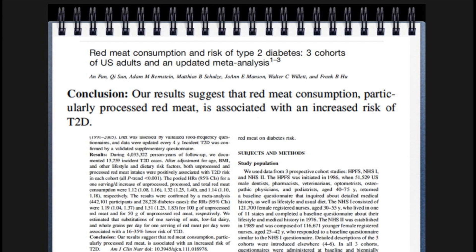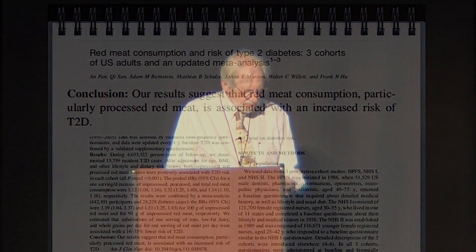The conclusion from one study is that the results suggest red meat is going to cause type 2 diabetes. And we know that doesn't make much sense. The problem is how do they prove it and how can we disprove it? The next slide shows you what you're up against when you do the literature.